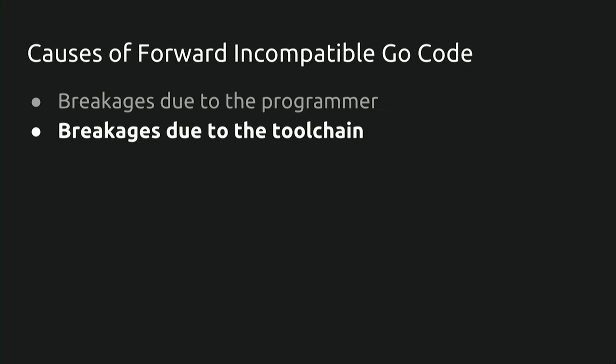So we've looked at how breakages can occur because of erroneous assumptions made by Go programmers. The second cause of forward-incompatible code is because the toolchain changed some behavior that it promised to have. In the development of the toolchain, we call these regression bugs, since the behavior regressed relative to a prior release. The developers of the Go toolchain are humans just like you, and bugs can and do get introduced. As the developers of the toolchain, we have the responsibility to adhere to the compatibility promise from our end. Let's talk about the Go release process.